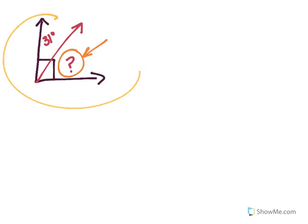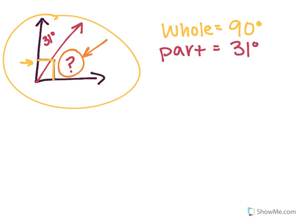Well, how much is the total angle? How many degrees is it? This box should be a telltale sign for how many degrees it is. The whole angle is 90 degrees. We know part of it is 31 degrees, and then we have a question mark and we don't know how much that is, but that question mark is the other part.